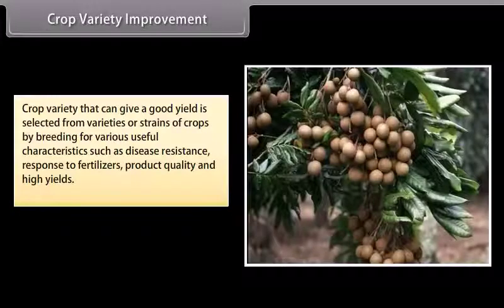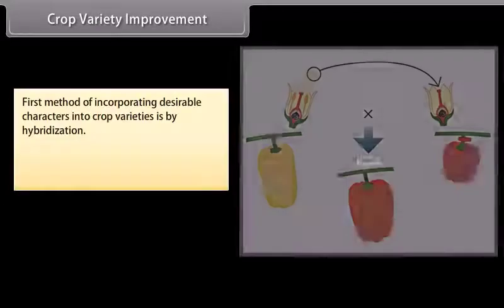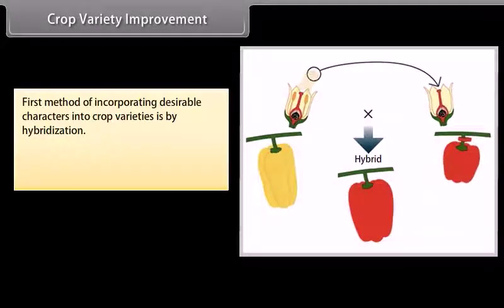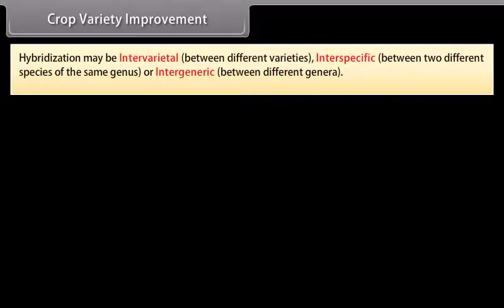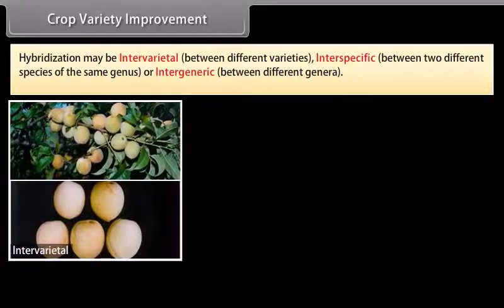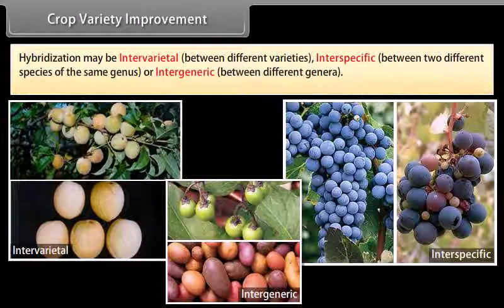A crop variety that can give a good yield is selected from varieties or strains of crops by breeding for various useful characteristics such as disease resistance, response to fertilizers, product quality and high yields. The first method of incorporating desirable characters into crop varieties is known as hybridization. Hybridization refers to crossing between genetically dissimilar plants, and may be inter-varietal, inter-specific, or inter-generic.